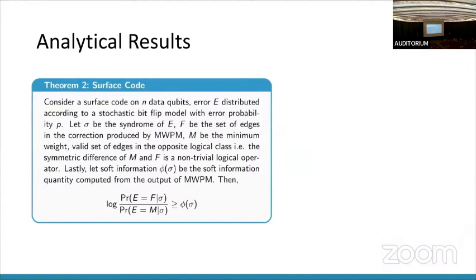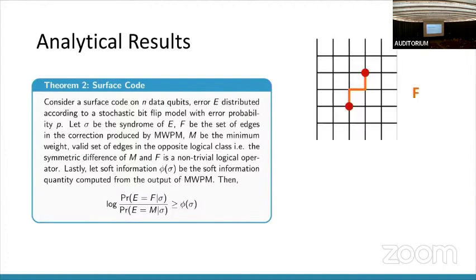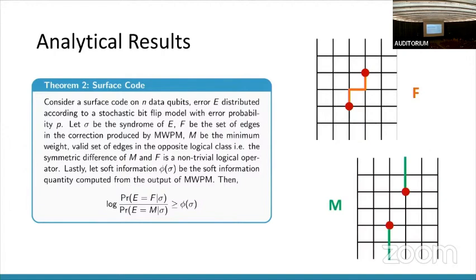That was just for the repetition code. Now we want to show it for the surface code as well. Unfortunately, we were only able to show this lower bound, but in a similar manner where we've defined F to be the decoder's output, and M to be the output of the opposite logical class. We have to show that the log of the probability that the error is actually the one that the decoder outputted over the probability that the error is the minimum weight one of the opposite logical class is greater than or equal to phi. One thing to note is that we also really wanted to show this with these logical classes, not just F and M.